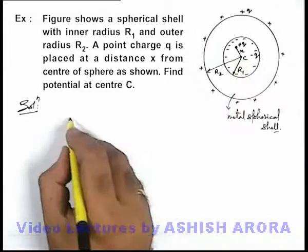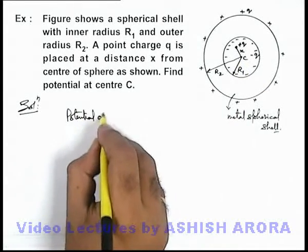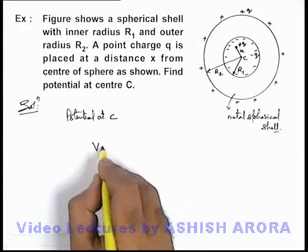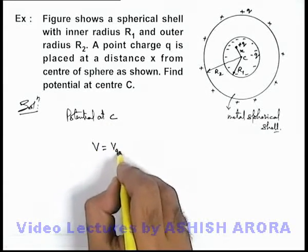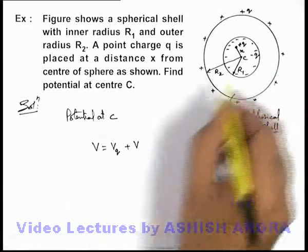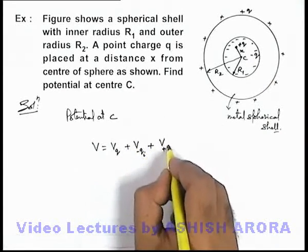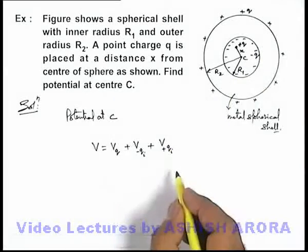So in this situation, if we wish to find out the potential at c, this can be directly written as potential due to the point charge q plus potential due to the negative induced charge plus potential due to the positive induced charge on the outer surface of the shell.